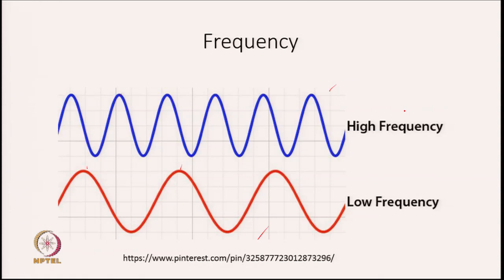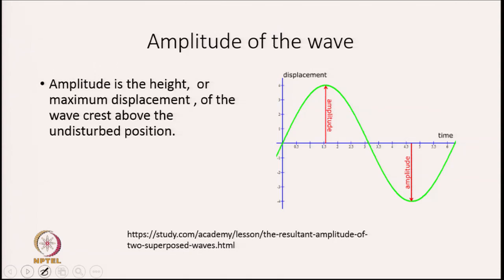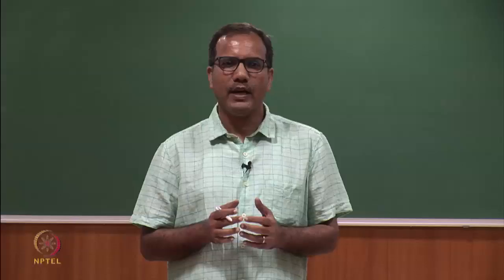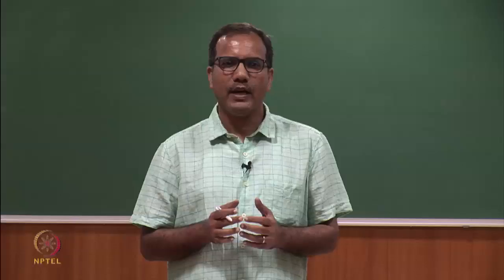Amplitude is the height or maximum displacement of the wave crest above the undisturbed position where y=0. It is the maximum displacement of the wave from the undisturbed position. Amplitude is related to energy transport: a small amplitude means a low-energy wave, while a high amplitude means a high-energy wave.